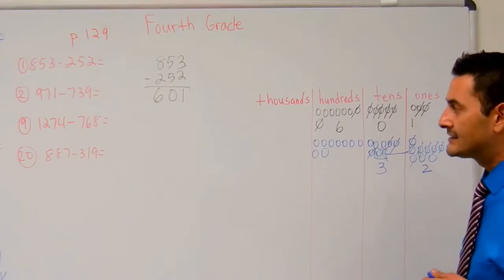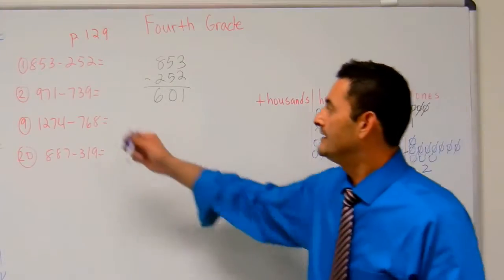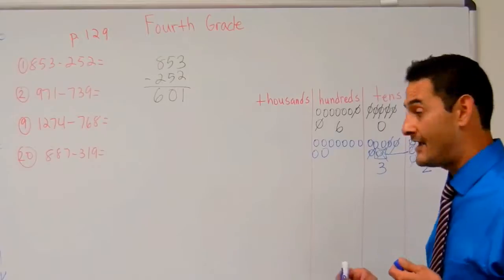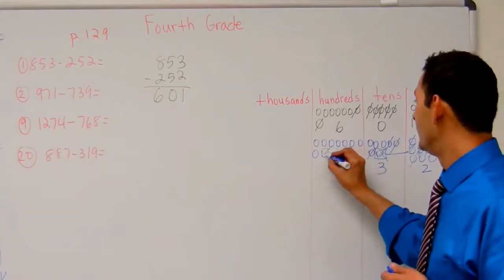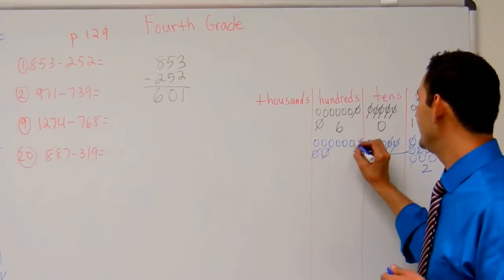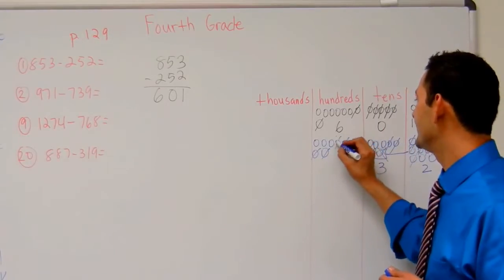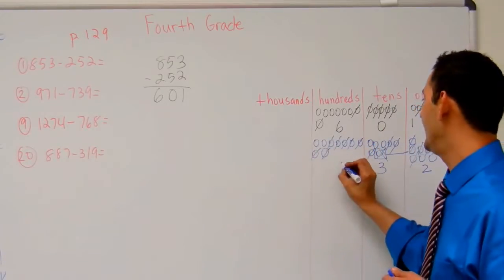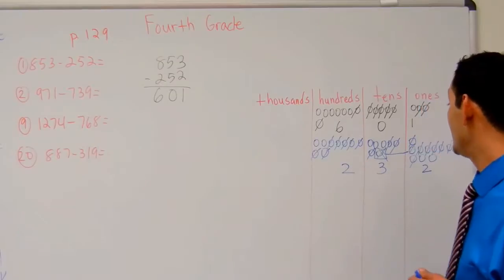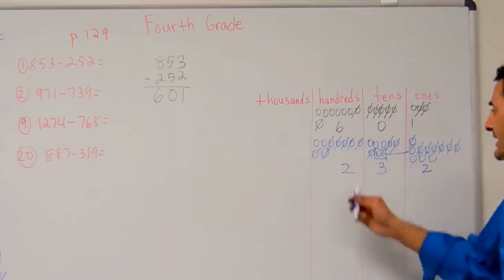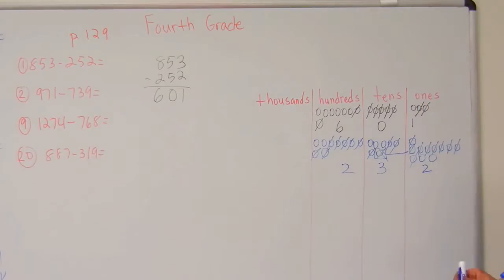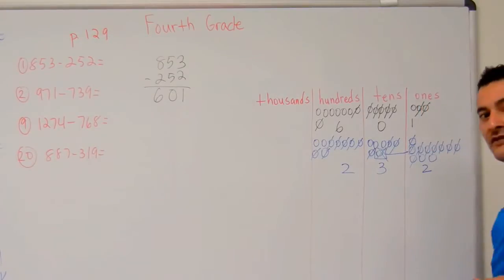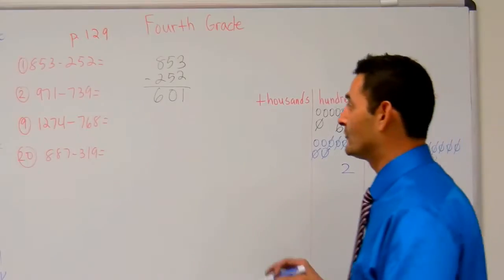Now let's take a look at the hundreds place. I'm going to take away seven — one, two, three, four, five, six, seven. I've got two left. So the answer is going to be 232. Let's go ahead and do that in the standard algorithm.